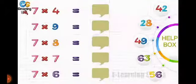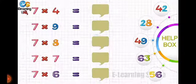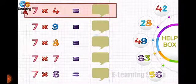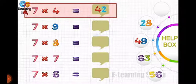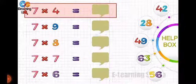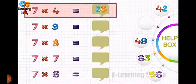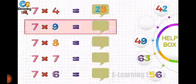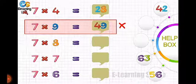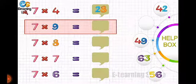Now let's move to the next activity: choose the correct answer from the help box. The first one is seven fours are — is it forty-two? No, that's wrong. Is it twenty-eight? Yes, that's the right answer! Seven fours are twenty-eight. Now seven nines are — forty-nine? No, that's wrong.